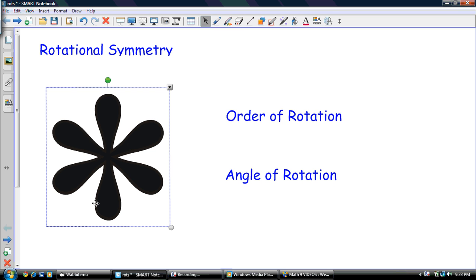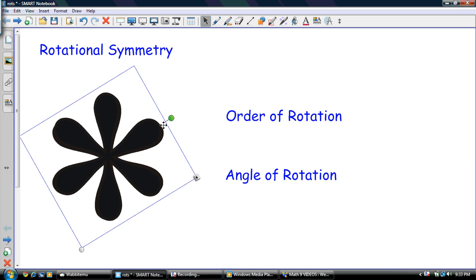So what we saw there was that this image, as we rotated it around, it coincided with itself several times. So basically, that's a fancy way of saying it—as we rotated it around, it looked exactly like it did when we started. So when I rotated it here, it doesn't look any different right here than it did at the start.